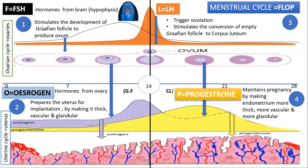If they ask about the ovarian cycle only, you only talk about steps one and three. To identify whether fertilization took place: first, if corpus luteum degenerates, fertilization did not occur. Second, if progesterone levels drop, fertilization did not take place. Third, if the endometrium sheds off — menstruation — fertilization did not occur. That's why pregnant people don't menstruate: the endometrium is not shed off.